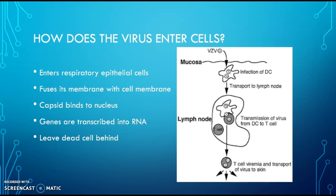The capsid and the viral DNA are then going to fuse together, and they're going to go find the Golgi complex. This is where they acquire the lipid membrane. And once they get this lipid membrane, they're going to leave this cell, leaving a dead cell behind.